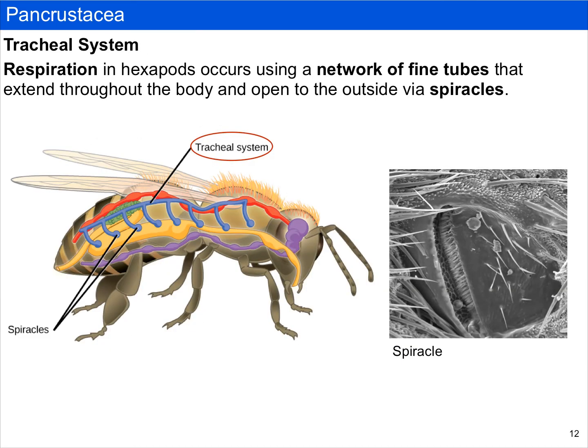Insects don't have lungs and they respire through a highly specialized system called a tracheal system, which is a network of fine tubes that extend throughout the entire body. These tubes operate mostly by diffusion, although some muscular contractions can occur which allow oxygen to diffuse more readily in the body. They're connected to outside holes called spiracles, which are on the outside of the body and allow oxygen to come in and permeate through all the tissues via the tracheal system.